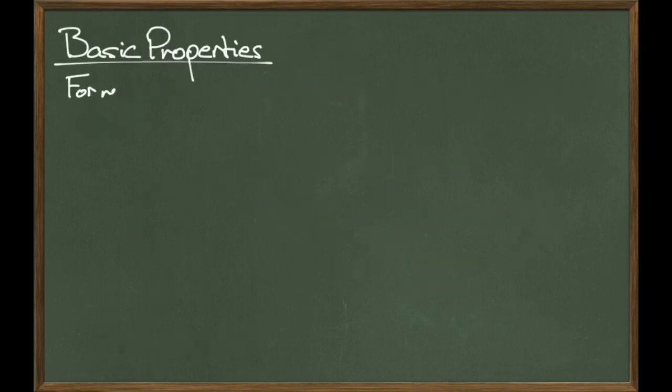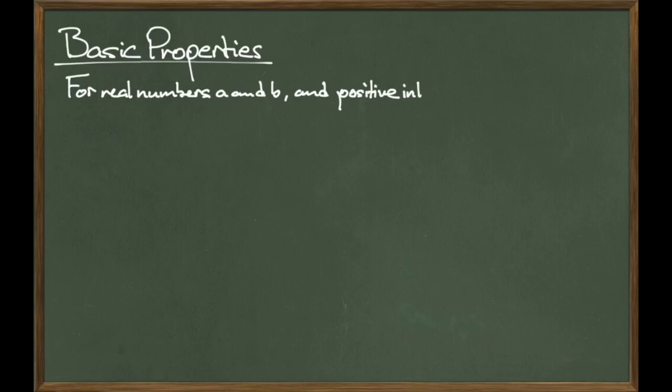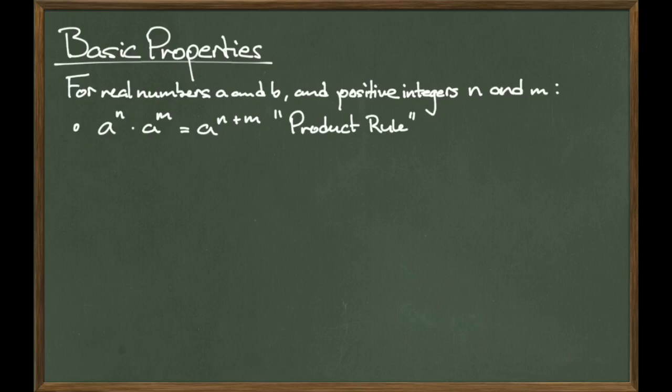We have enough information to start defining some basic properties. Let a and b be non-zero real numbers, and let m and n be positive integers. The product of a to the n times a to the m is equal to a to the n plus m. This is called the product rule. Essentially, this rule says that if I am multiplying two exponential numbers where the bases are the same, I can just add the exponents together.